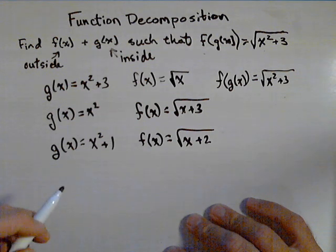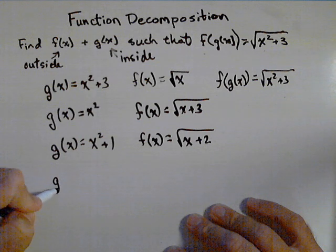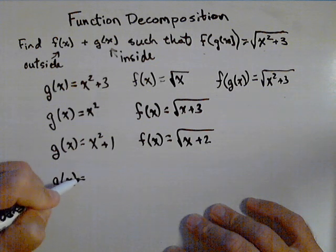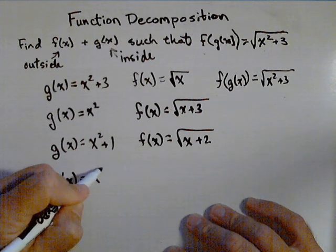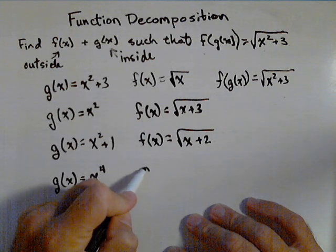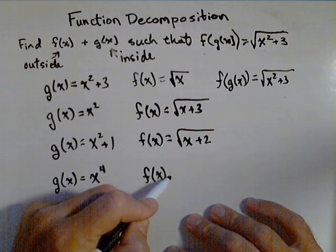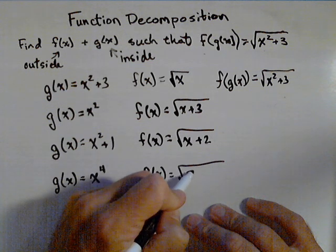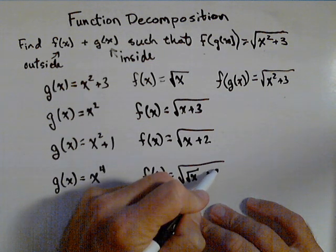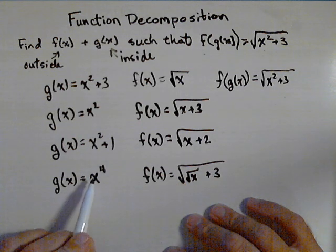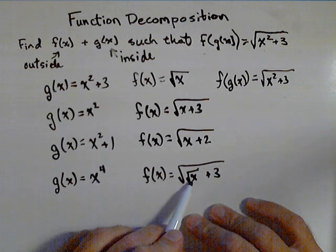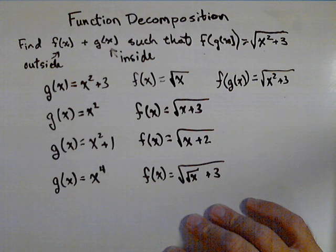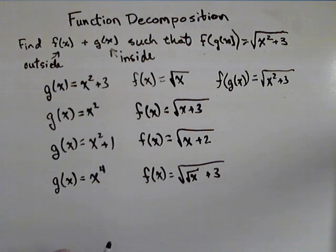If you want to get a little fancy, what if we let g of x equal x to the fourth? Then, f of x would be the square root of the square root of x plus three. Because when we put x to the fourth in there and take a square root, we'll get x squared. So, there's a whole bunch of possibilities that we can look at when doing function decomposition.